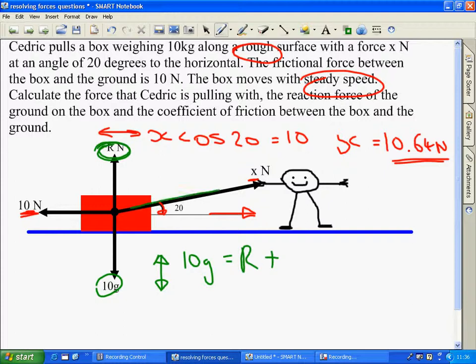and this lots of people forget, this also has a component vertically. Horizontally, its component was x cos 20, vertically, its component would be x sin 20.